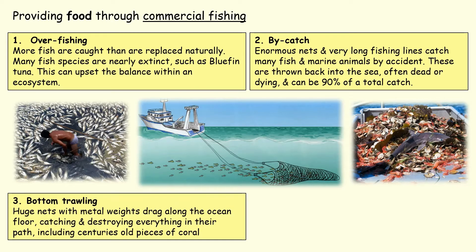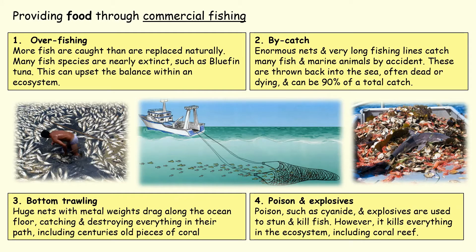Next, we fish using a technique called bottom trawling, where metal weights are put within huge nets to drag the net across the bottom of the sea. This can destroy coral and again scoops up everything within the net, which can lead to it dying. Finally, in certain parts of the world people fish using poison and explosives, which is effective but kills everything within that area of sea, even things that are not wanted.